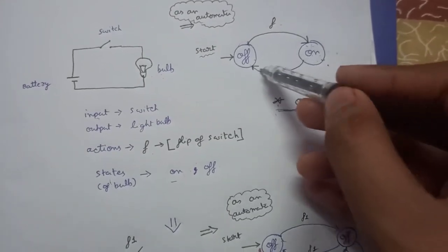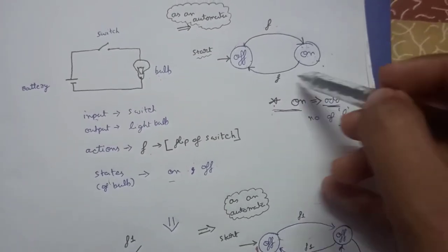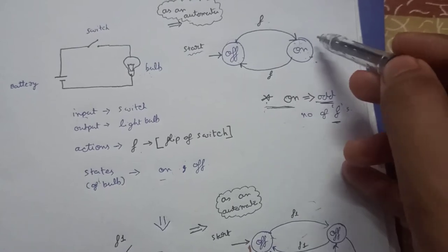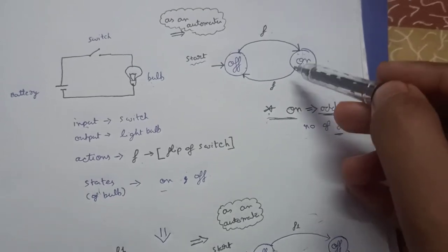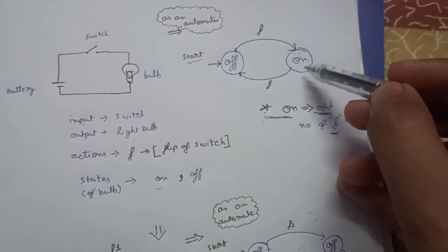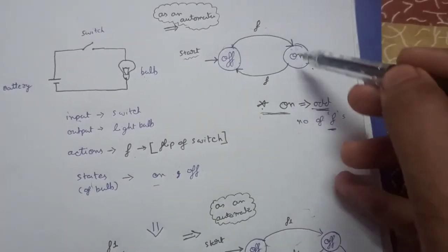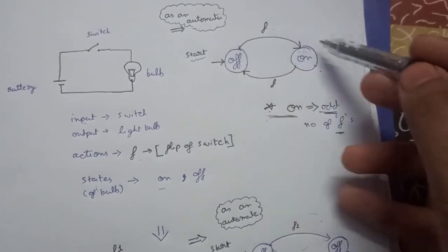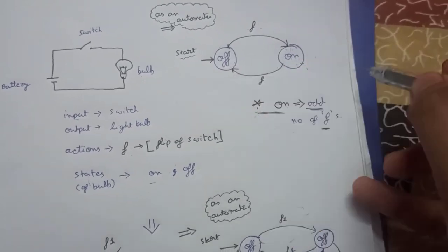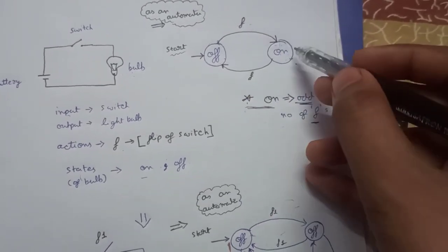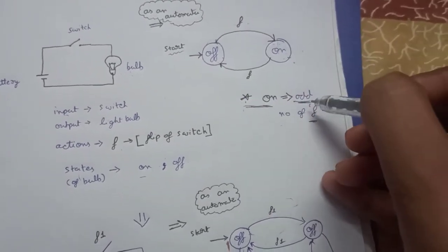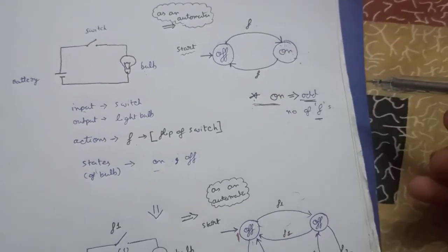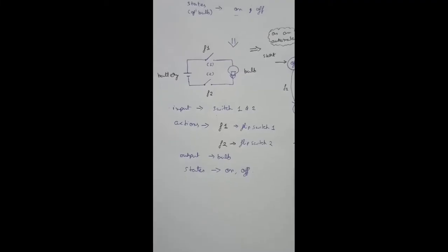Basically, the bulb is on for an odd number of flips — the 1st, 3rd, 5th, 7th, 9th, 13th, 19th flip — any odd number of flips means the state will be on, and for any even number of flips it will be off.